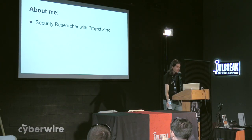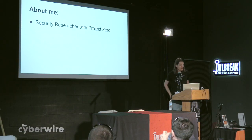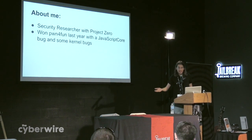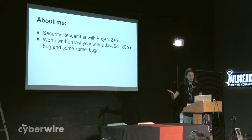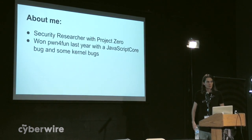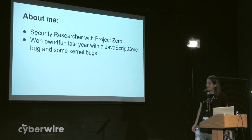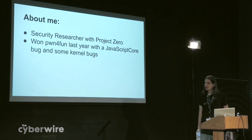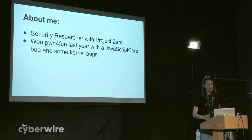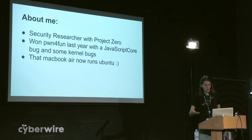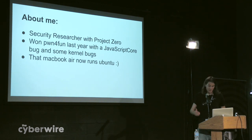A quick introduction about me: I'm a security researcher with Google Project Zero. I started looking at Apple stuff about a year ago. I won Pwn for Fun, which was a contest we kind of invented for ourselves, with a JavaScriptCore bug and some OSX kernel bugs. Over the last year I continued that work looking for OSX and iOS sandbox escapes and privilege escalations. During this talk, you will understand why the MacBook Air that I won now runs Ubuntu.